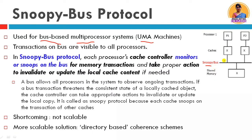The bus monitors which transactions are being performed — if some cache has updated data, the bus snoop means all processes immediately know about it. Every processor has a cache controller. The cache controller monitors the bus — which we call snooping — to investigate which transactions are happening in the caches, and whatever transactions are happening, such as updates or changes, proper actions are taken.